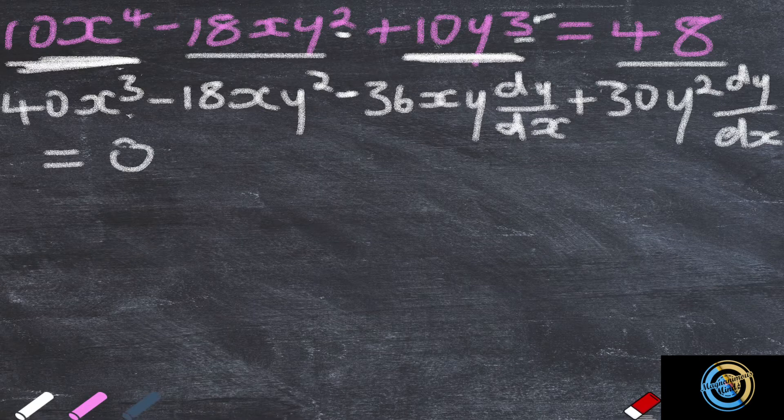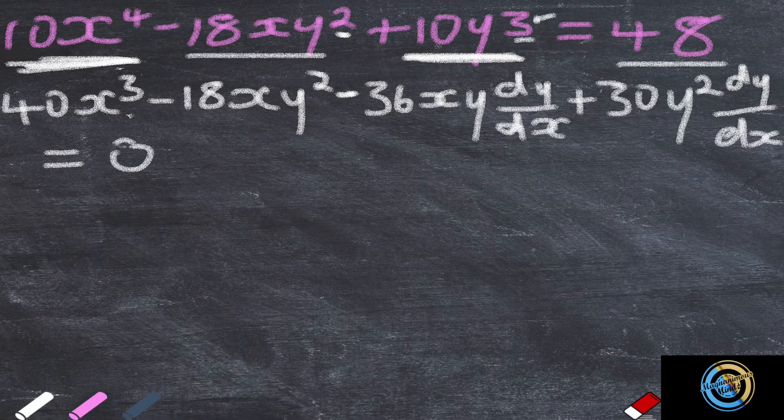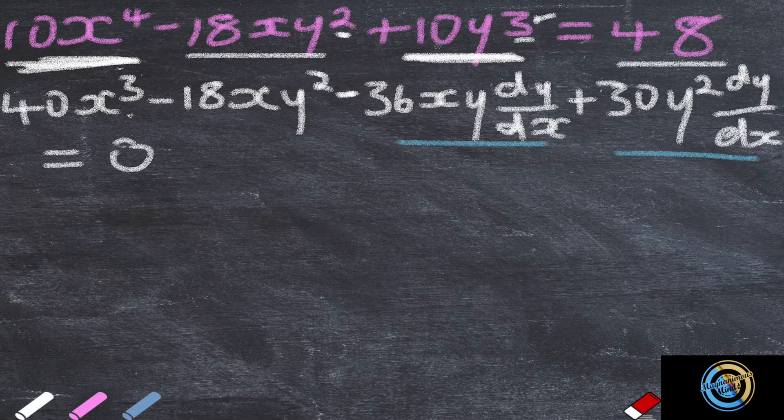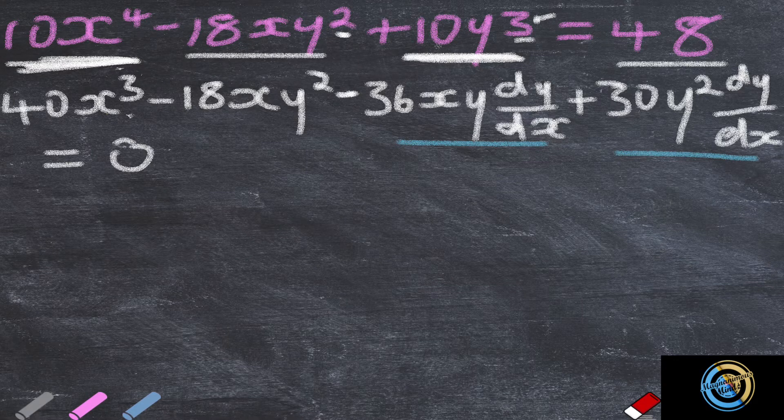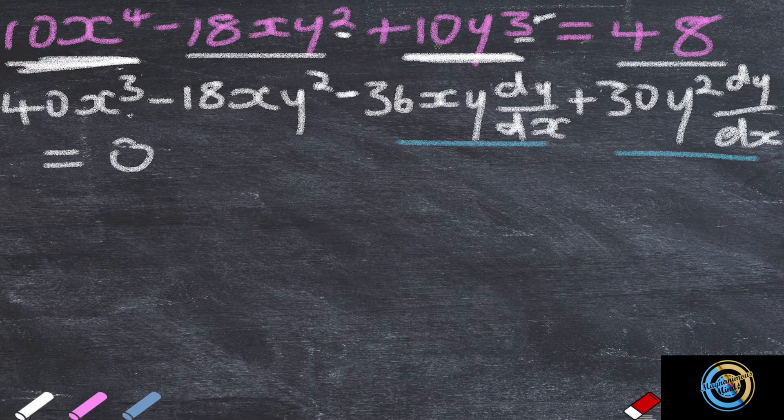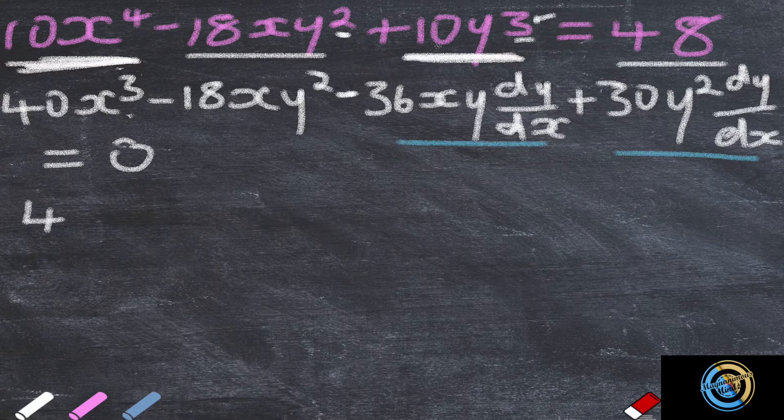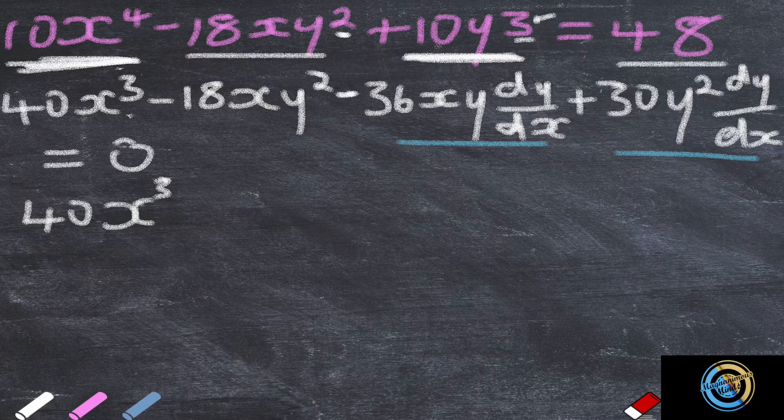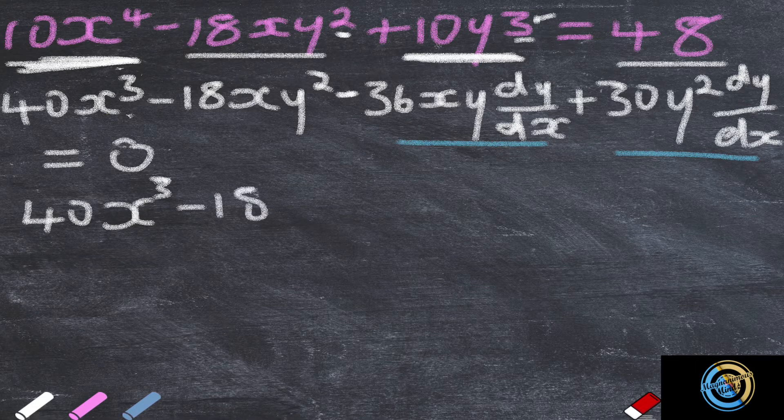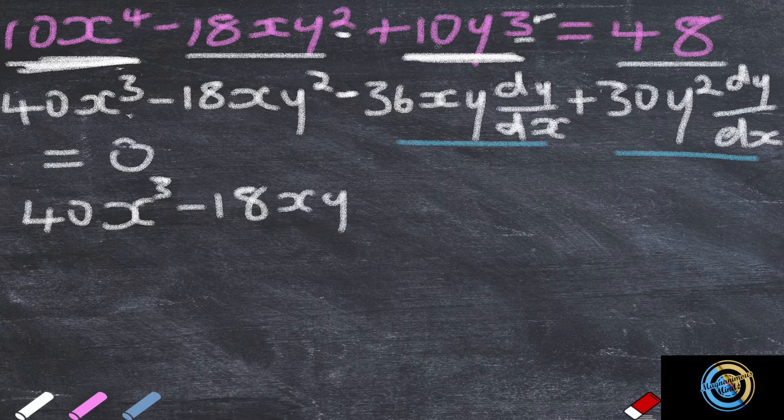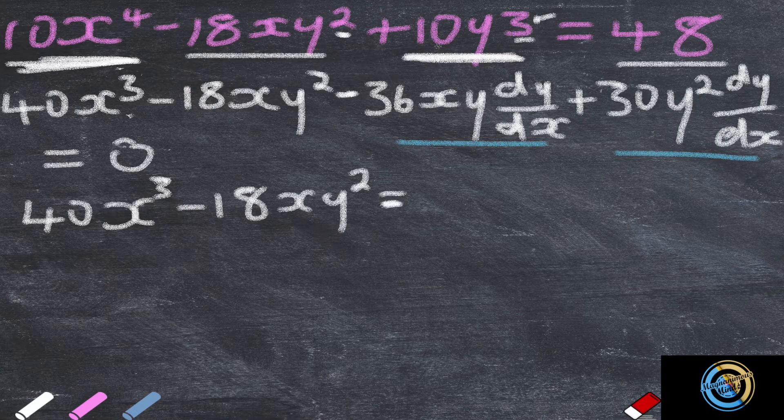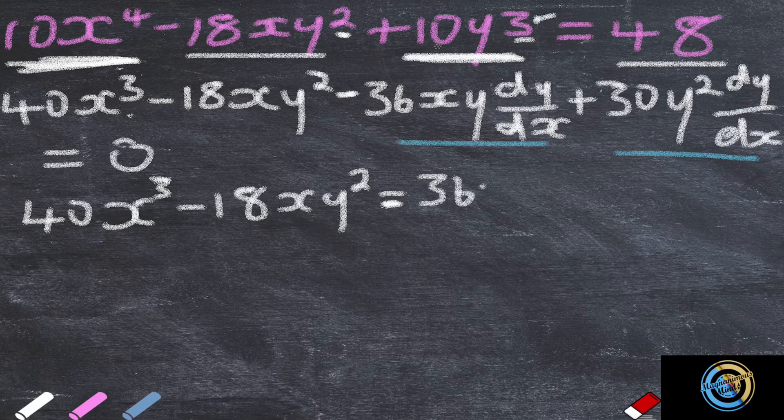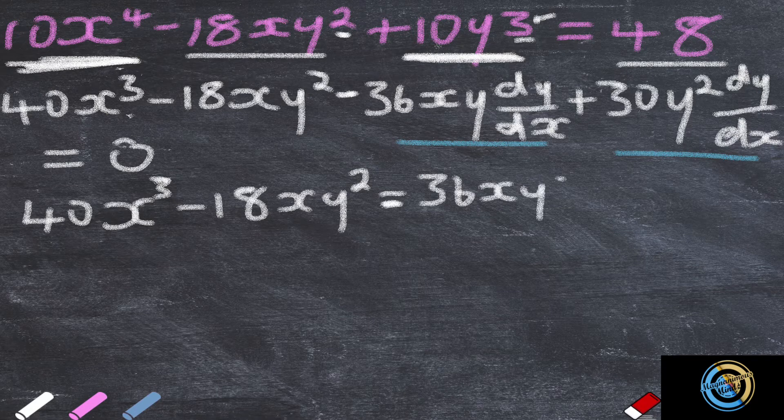Then from here we group like terms. We take terms with the dy over dx to the other side of the equal sign. So we are going to get 40x cubed minus 18xy squared equals to 36xy dy over dx.